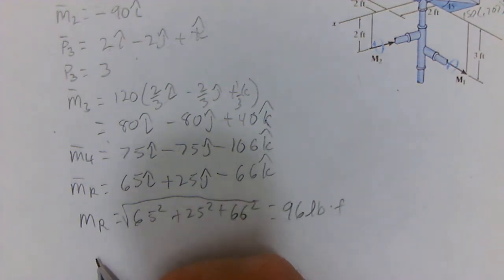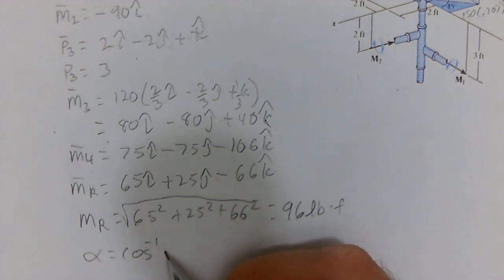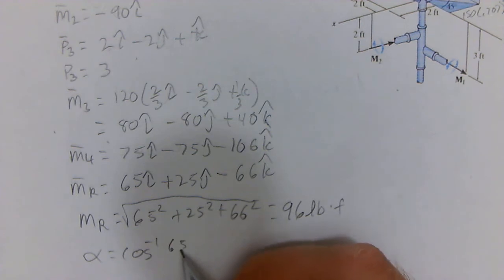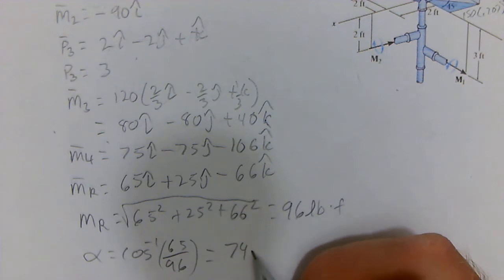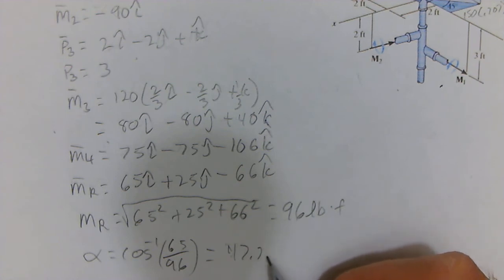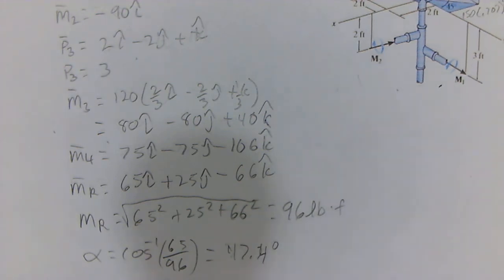And so the coordinate angles, alpha equals the inverse cosine of 65 over 96, which equals 47.4 degrees.